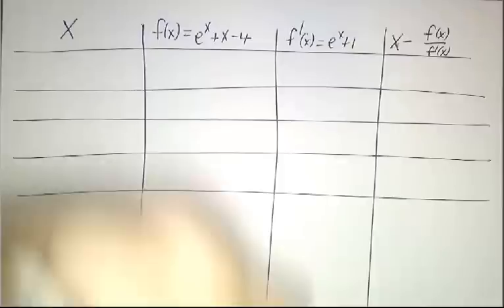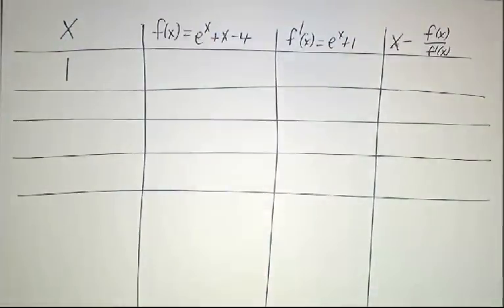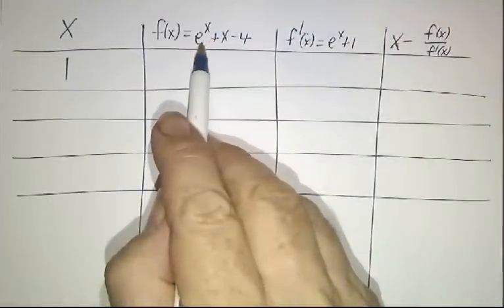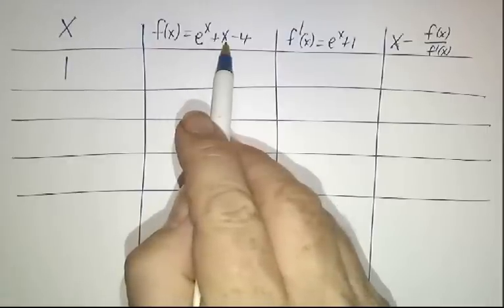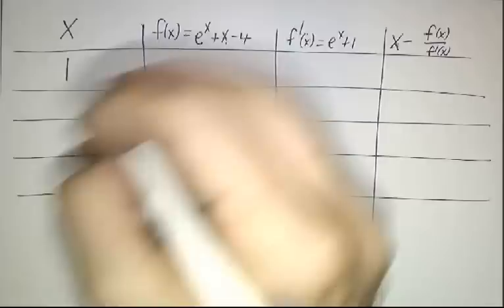So if we start with a guess of 1, 1's not too far off because e to the 1 is e, which is about 2.7, plus 1, that's 3.7. That's pretty close to 4.